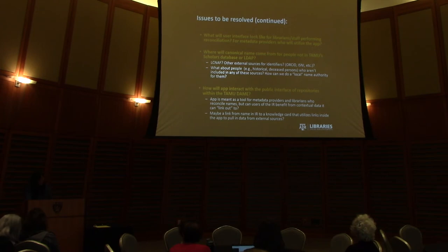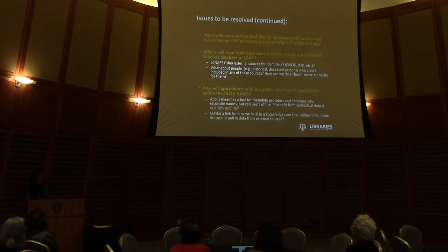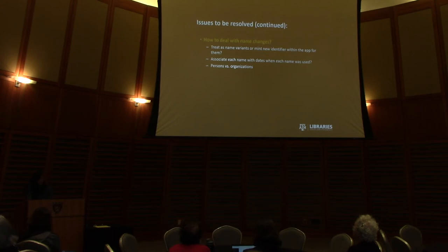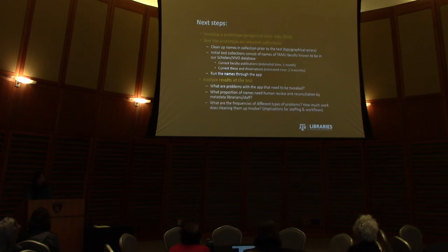Other open questions include how to deal with name changes — if somebody gets married, do we treat it as a name variant or mint a new identity? And how do we deal with organizations — should we treat them the same as people? Our immediate next step is to develop a working prototype, which we anticipate will be up sometime this summer, but definitely not before July. In the meantime, we've preselected low-hanging fruit collections where names are more or less guaranteed to be in Scholars — current faculty publications and current theses and dissertations where they may have served as advisors.